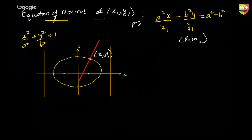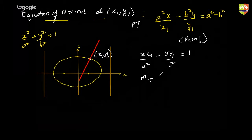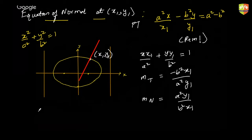Please prove this and remember this result. You can take a clue from the equation of the tangent, which is xx1/a² + yy1/b² = 1. The slope of the tangent is -b²x1 / (a²y1), so the slope of the normal is going to be a²y1 / (b²x1).